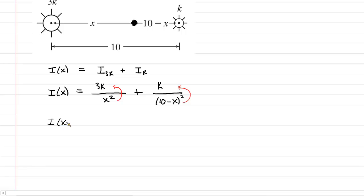So we are simply rewriting this as 3K times X to the negative 2 plus 1K times 10 minus X to the negative 2. That's much better for the purposes of taking the derivative. So here we go. We're going to call this I prime of X. We're going to use a simple power rule for the first term here. So negative 2 multiplied by 3K will give us negative 6K. And then it becomes X to the power of negative 3 because you have to subtract 1 from the power.